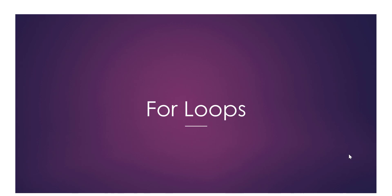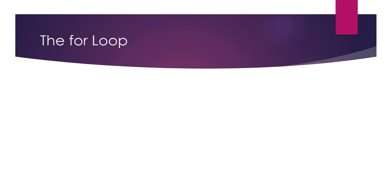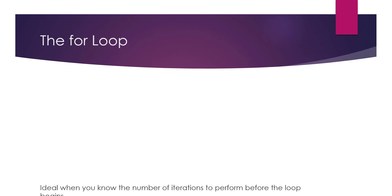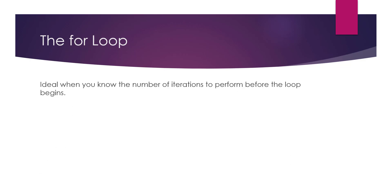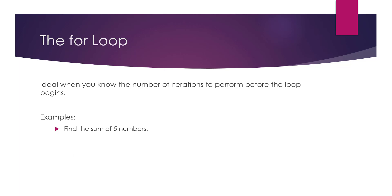In this video we will look at another type of iteration or looping in Java: the for loop. We usually use for loops when we know how many items we are going to process or how many times we will perform the same operation. For example, if you want to read five numbers from the user, find the maximum of 20 numbers, or print the odd numbers from 1 to 10 — you exactly know how many items you have in your data set.